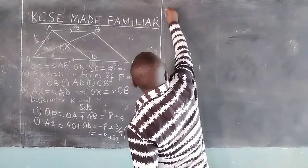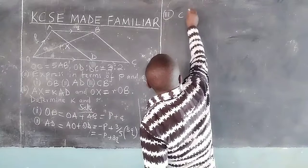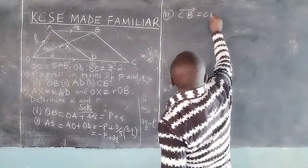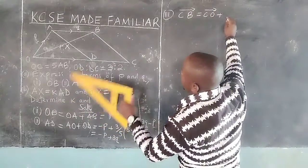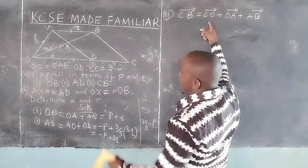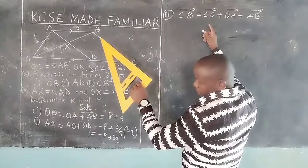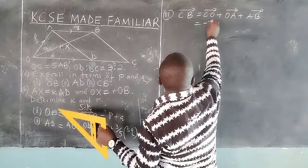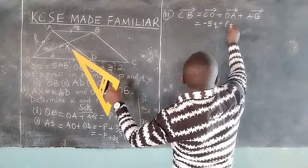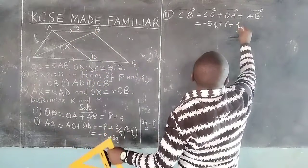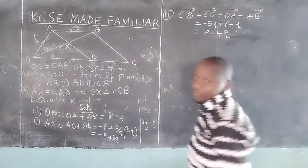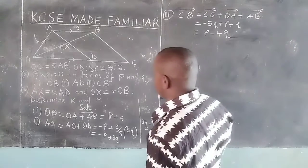For Roman numeral 3, we are told to express vector CB, which can be given by the route C, O plus O, A plus A, B. Remember OC is 5Q, which means CO is negative 5Q, plus OA which is vector P, plus AB which is vector Q. Grouping the Q terms, we get P minus 4Q.